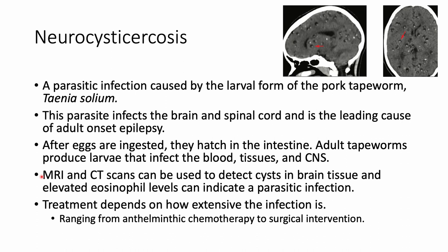Neurocysticercosis is diagnosed using brain scans such as MRIs and CT scans to detect cysts in brain tissue, and by measuring eosinophil levels — the white blood cells indicating a parasitic infection. Treatment depends on the extent of infection and can include anti-helminthic chemotherapy, administered in small doses over a long period since this parasite is a eukaryote, as well as potential surgical intervention to remove cysts from the brain.